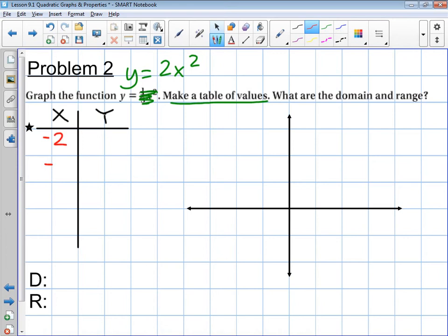So, the easiest values are negative 2, negative 1, 0, 1, and 2. So, you're choosing the x values. Then you calculate the y values by putting it into the equation.